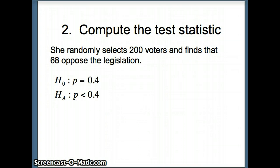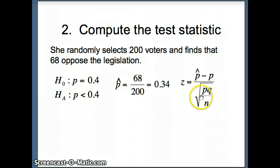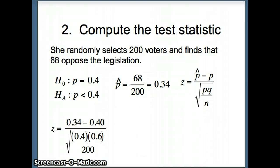Our next step is to compute the test statistic. She has 200 voters and 68 opposed, giving P-hat = 68/200 = 0.34. The test statistic formula is Z = (P-hat − P) / √(PQ/N). Substituting: Z = (0.34 − 0.4) / √(0.4 × 0.6 / 200), where P = 0.4, Q = 1 − 0.4 = 0.6, and N = 200.